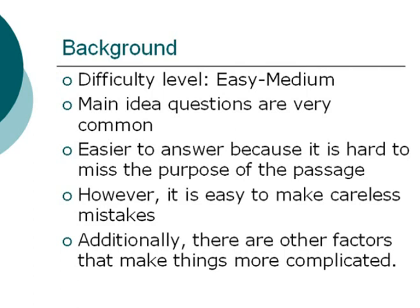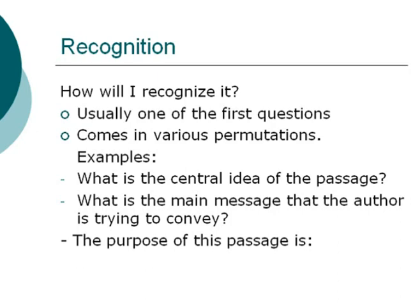Main idea questions are often easier because it is difficult to miss the purpose of the passage. However, because it tends to be an easier question type, it is common to make careless mistakes. Additionally, there are other factors such as certain types of answer traps that may make things a little bit more complicated. Main idea questions are usually found as one of the earlier questions in the passage, and they can come in various permutations such as 'what is the central idea of the passage' or 'the purpose of this passage is.'